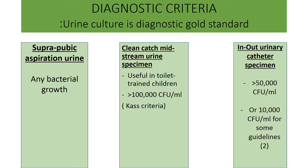One can also use an in-and-out catheter to collect urine, but this method can be distressing for the patient and the parents as well. If one uses an in-and-out catheter, then growth of 50,000 colony forming units per mL, or in some guidelines 10,000 colony forming units per mL, would be considered as diagnostic of a urinary tract infection.